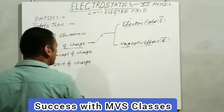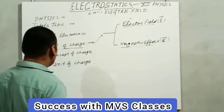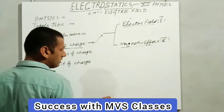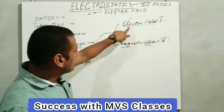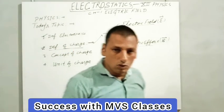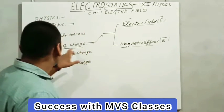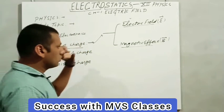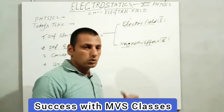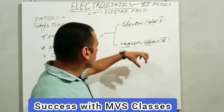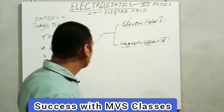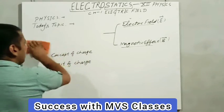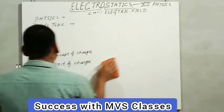यानि हम कह सकते हैं कि charge की definition है: it is a property of an object, किसी भी object की एक ऐसी property जिसके according वो object electric field और magnetic field experience करता है, show करता है, और feel करता है। अगर charge को electric field और magnetic field में छोड़ दिया जाए तो इसका effect charge के ऊपर आता है, और charge खुद भी electric field और magnetic field produce करता है। यह हमारे पास definition of charge है।